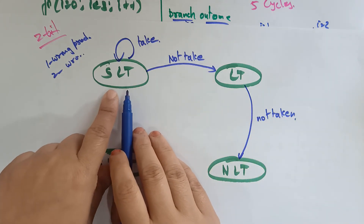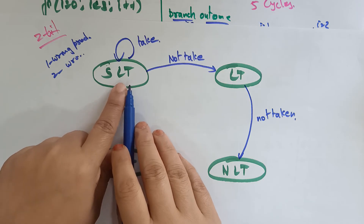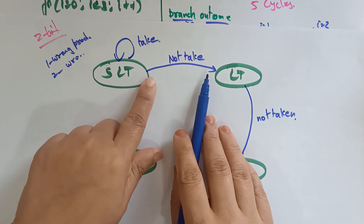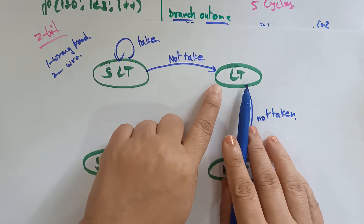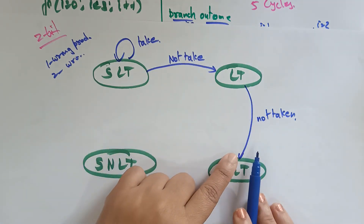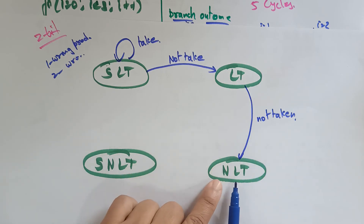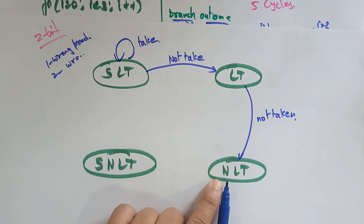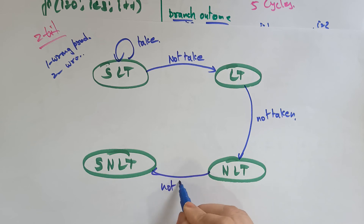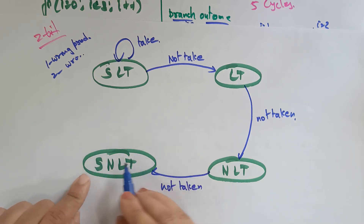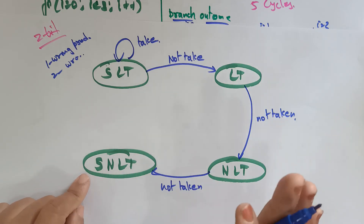From SNLT (strong not likely to be taken), I am trying not to take. But the outcome says take. I check one more prediction — still in non-taken mood. If the outcome again says take, that is two wrong predictions. After two wrong predictions from SNLT, my mind changes to NLT (non-likely to be taken).